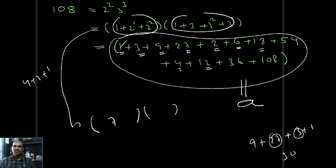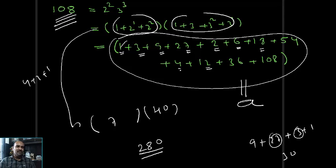For the first bracket: 1 + 2 + 4 + 8 + 16 = 31. For the second bracket: 1 + 3 = 4. So 31 × 4 = 124. The sum of factors of 48 equals 124.